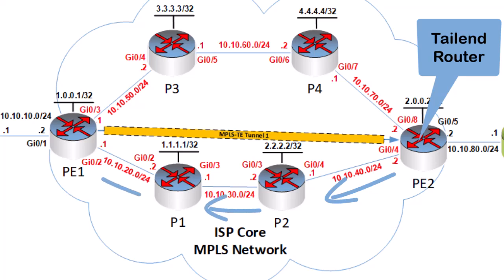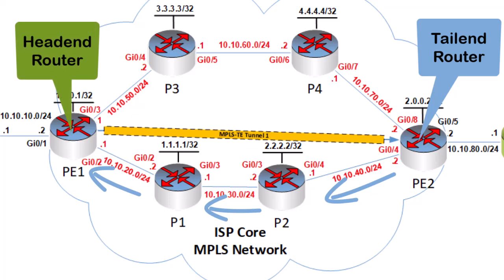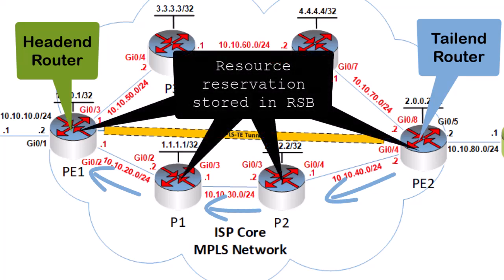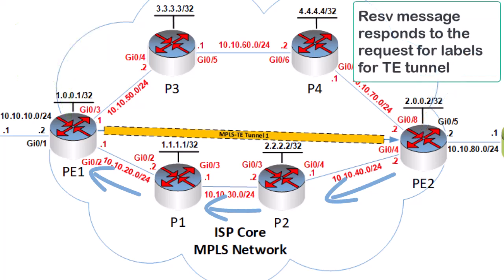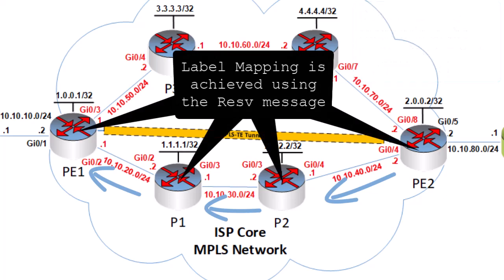The reservation message is generated by the tail end router as a response to the path message. This response is essentially a confirmation that the requested reservation has been achieved — since the path message reached the tail end successfully, the reservation has been successful on all routers along the path. The reservation message also responds to the request for MPLS labels found within the initial path message. The actual label mapping for the whole TE tunnel begins with the reservation message as it is forwarded upstream from the tail end to the head end router, with each upstream router performing label mapping until the head end router is reached.